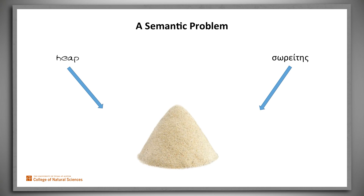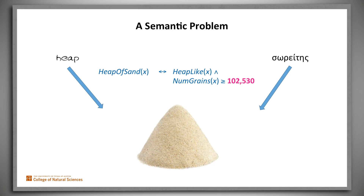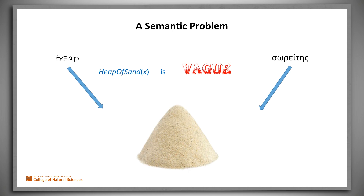But how? Well, we could replace the two premises by a single one that says that something is a heap of sand if and only if it is otherwise heap-like and it contains at least 102,576 grains of sand. But why that number? Why not 102,530 or 103,000? Any number will do to get us out of the paradox, but it's hard to choose a number. The problem is that the English word heap is vague in a very useful way, but as a result, we don't know exactly how to assign meaning to it.